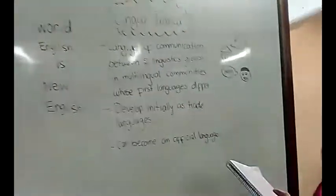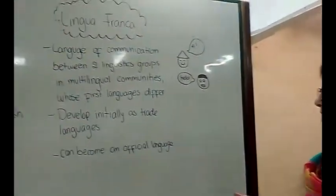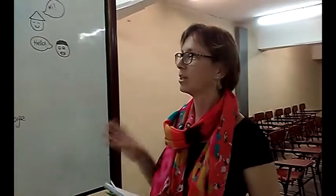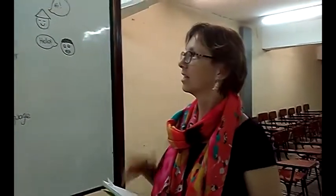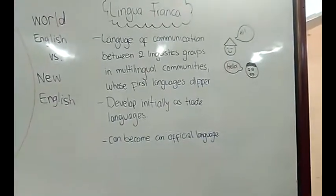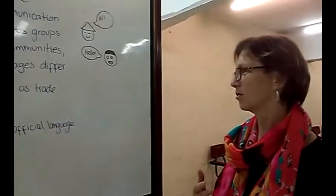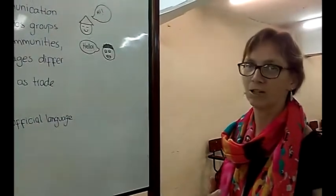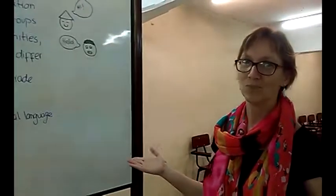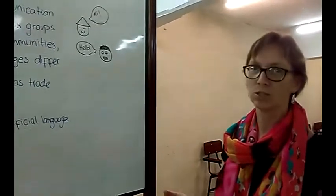We also have what we call the lingua franca, and it's a language of communication between two linguistic groups or multilingual communities whose first language is different. So we have communities where each one grows up with a different language, but they have one language in common in which they can communicate, and that's the lingua franca. In most countries that would also be English. They develop initially as a trade language, because people who trade travel into many different countries with many different languages, so they need one language in common. And it can also become an official language, especially in India and in Africa, where there are many different languages and dialects.